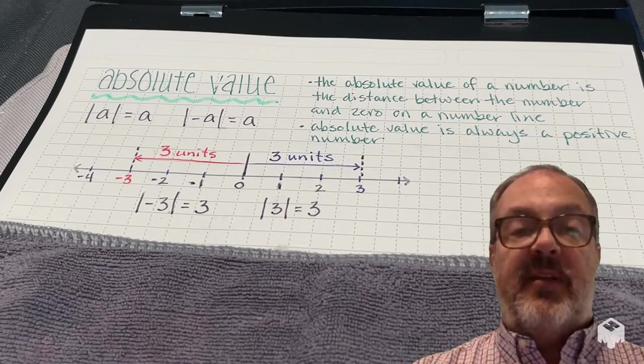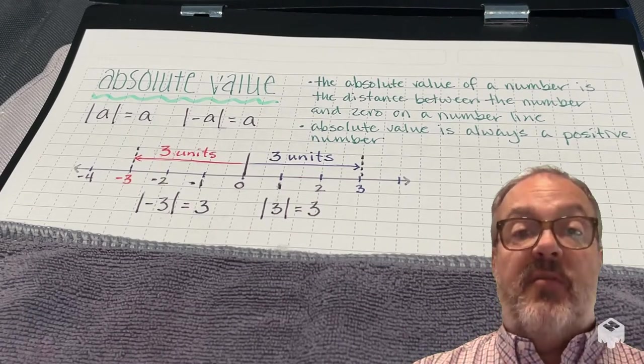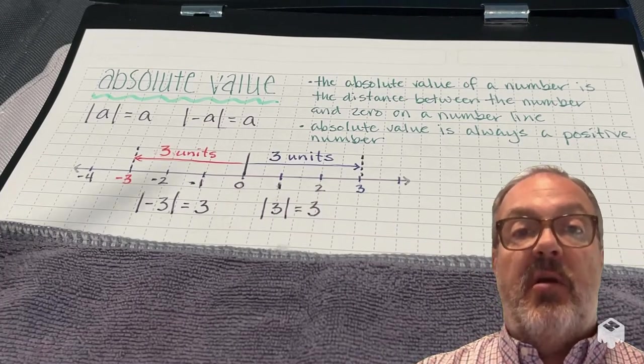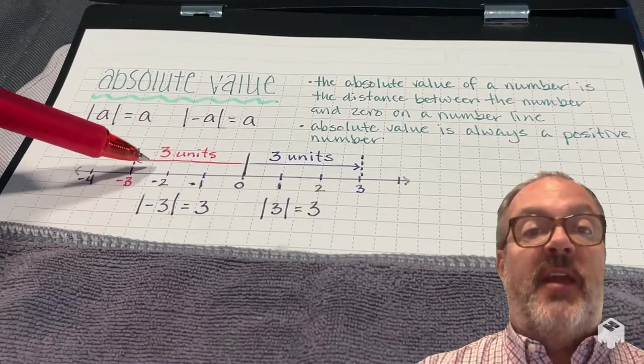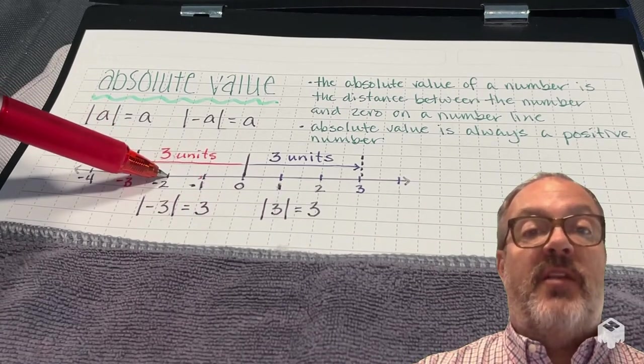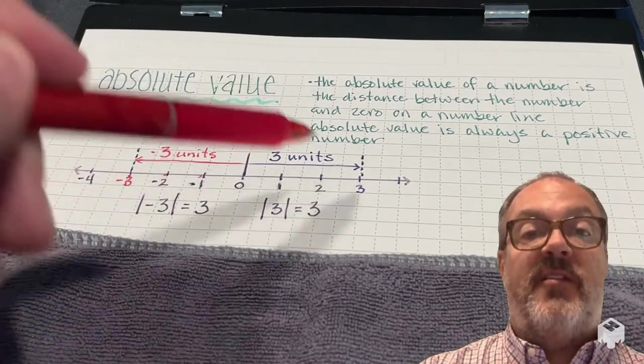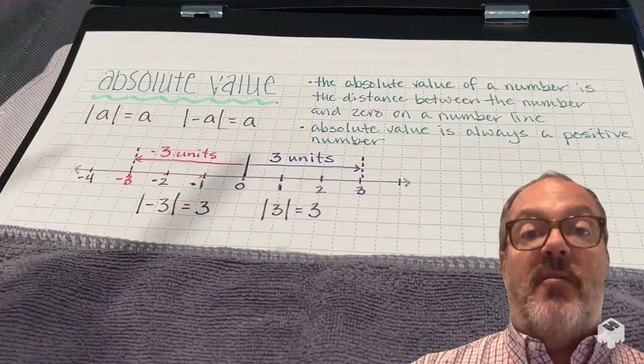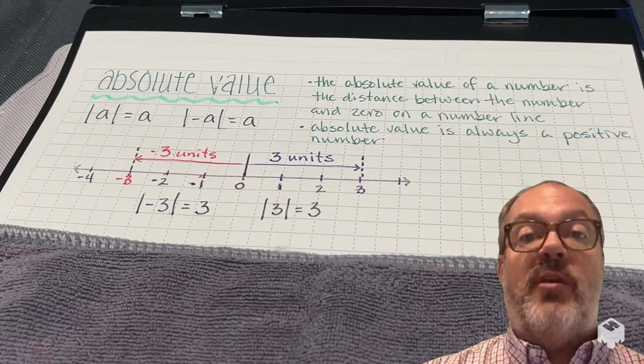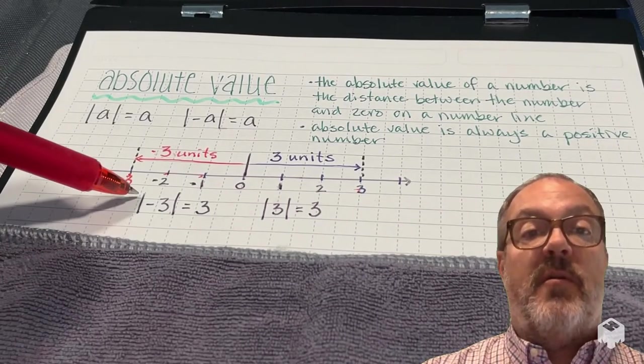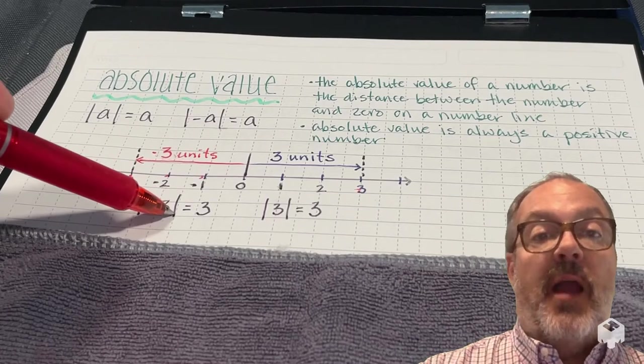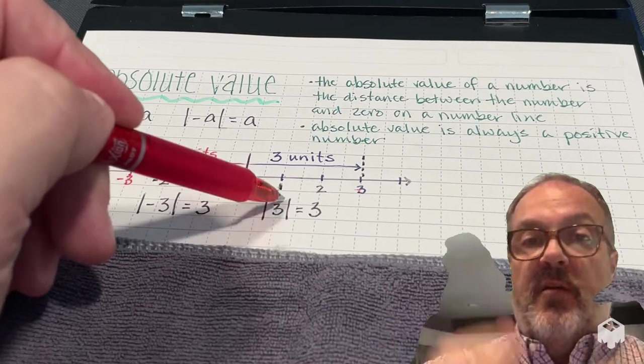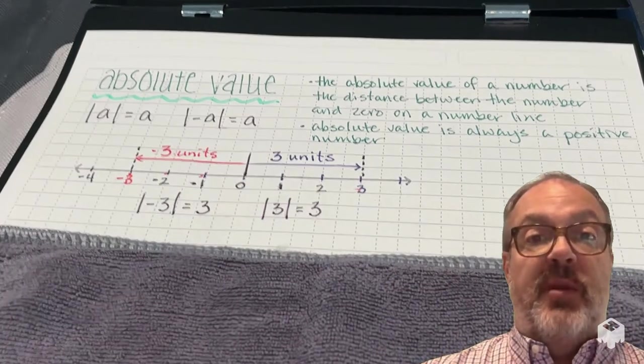Let's talk about absolute value. All right, so absolute value of a number is the distance between that number and 0 on a number line. So you can see, if I'm at negative 3, the distance from 0 is 3 units. If I'm at positive 3, the distance is still 3 units. Remember that absolute value is always going to be a positive number. Remember, I write the absolute value sign with these two horizontal lines with the value in between it.